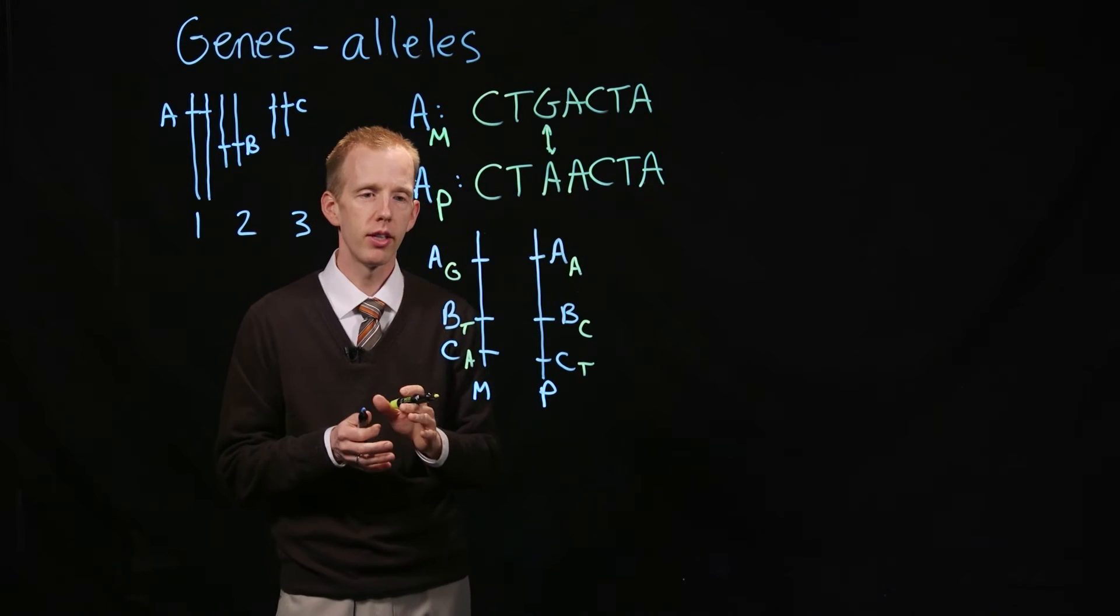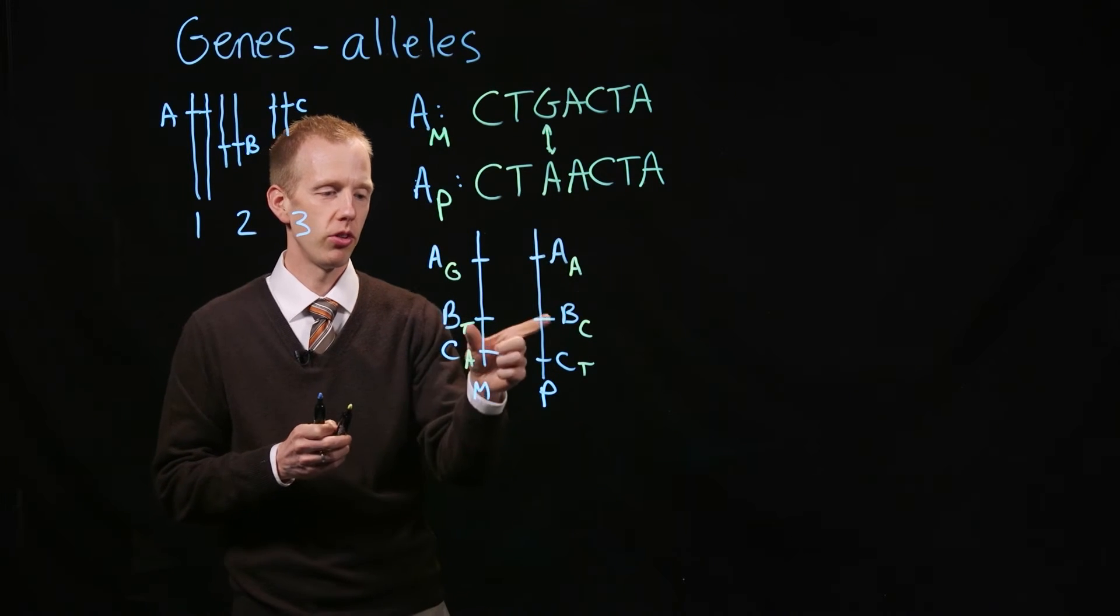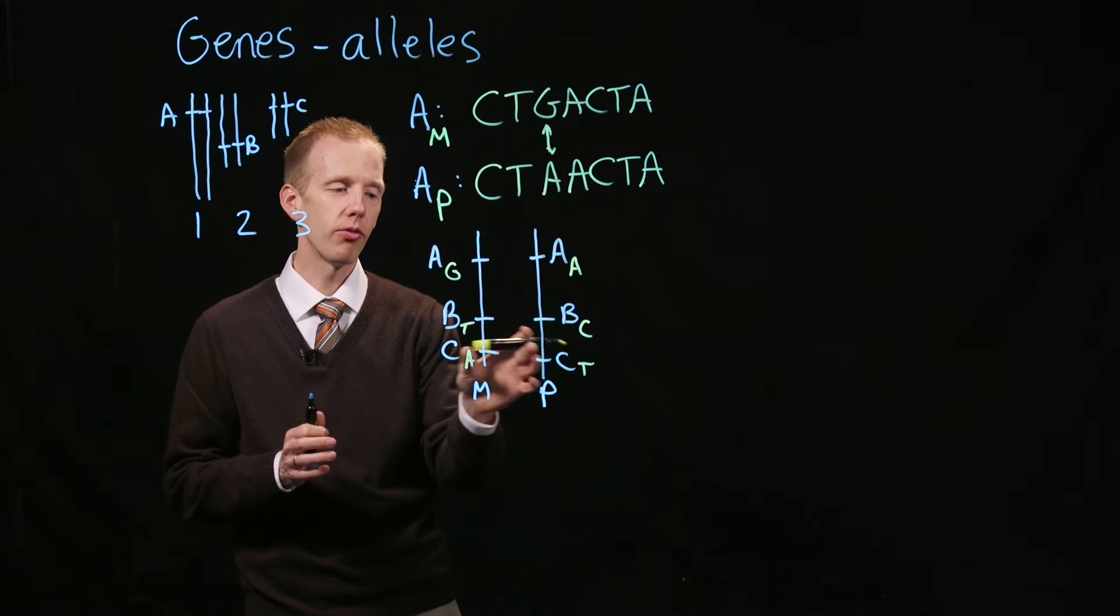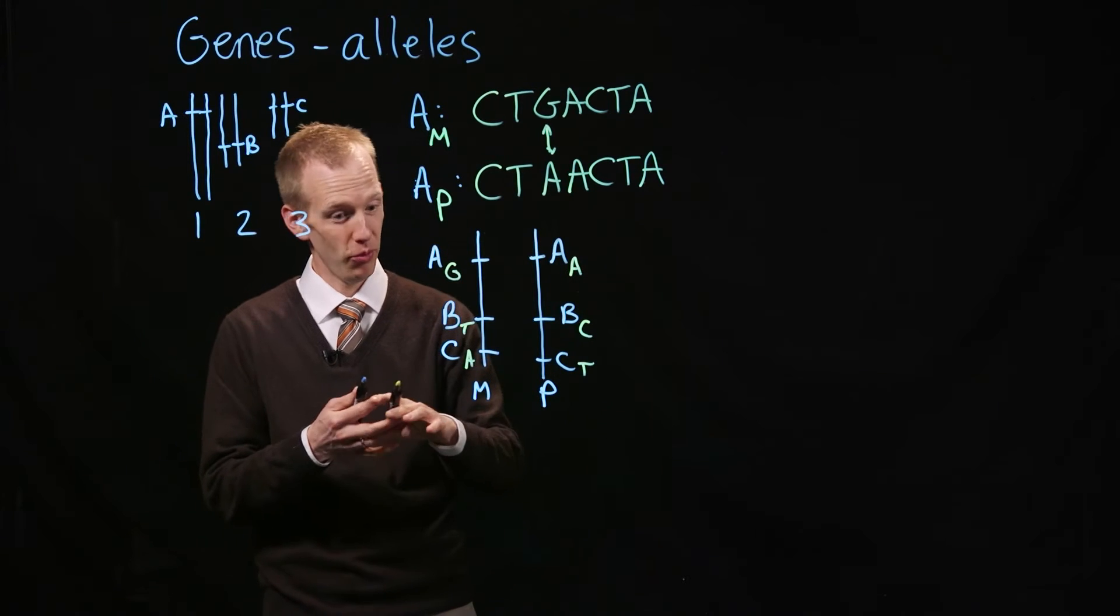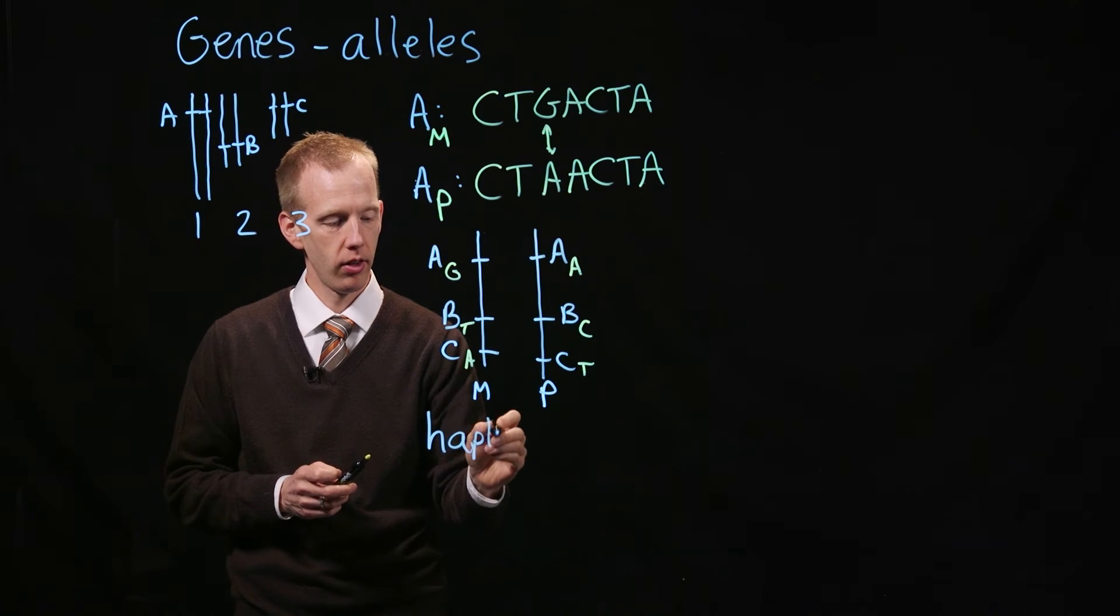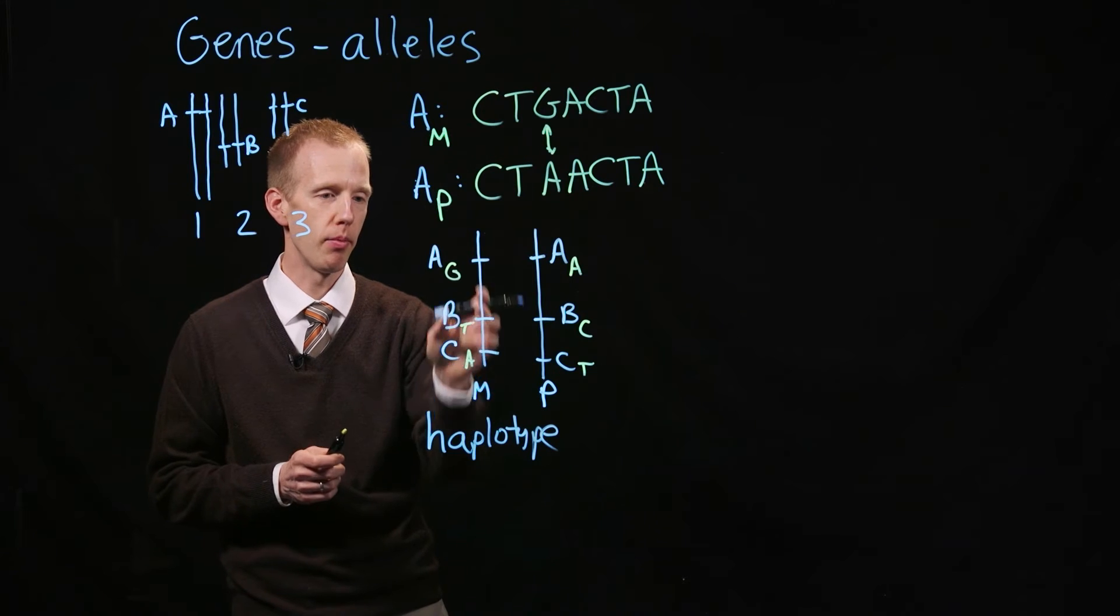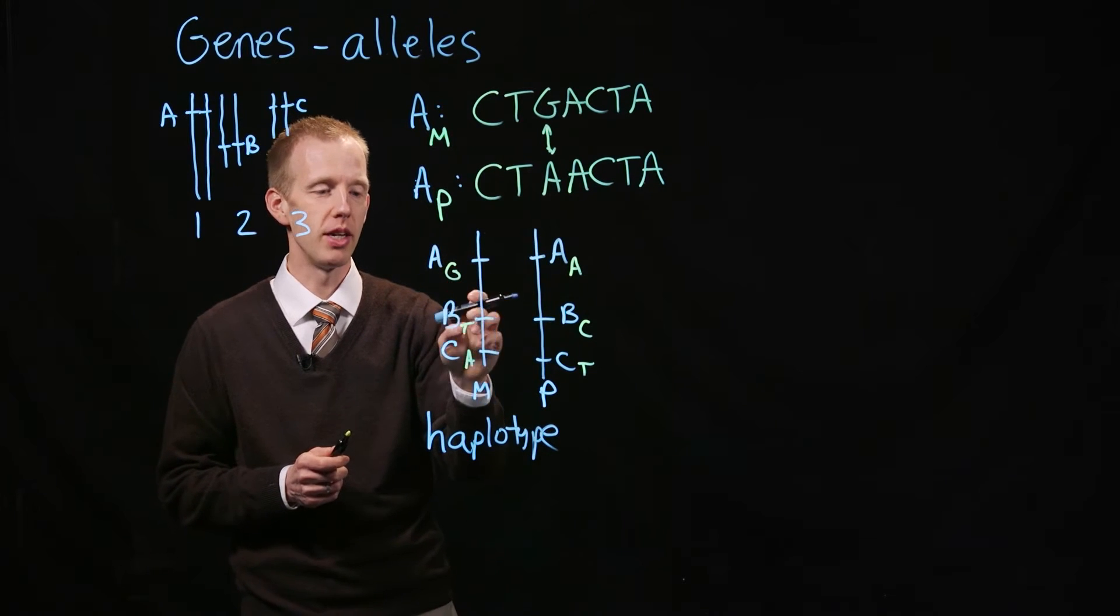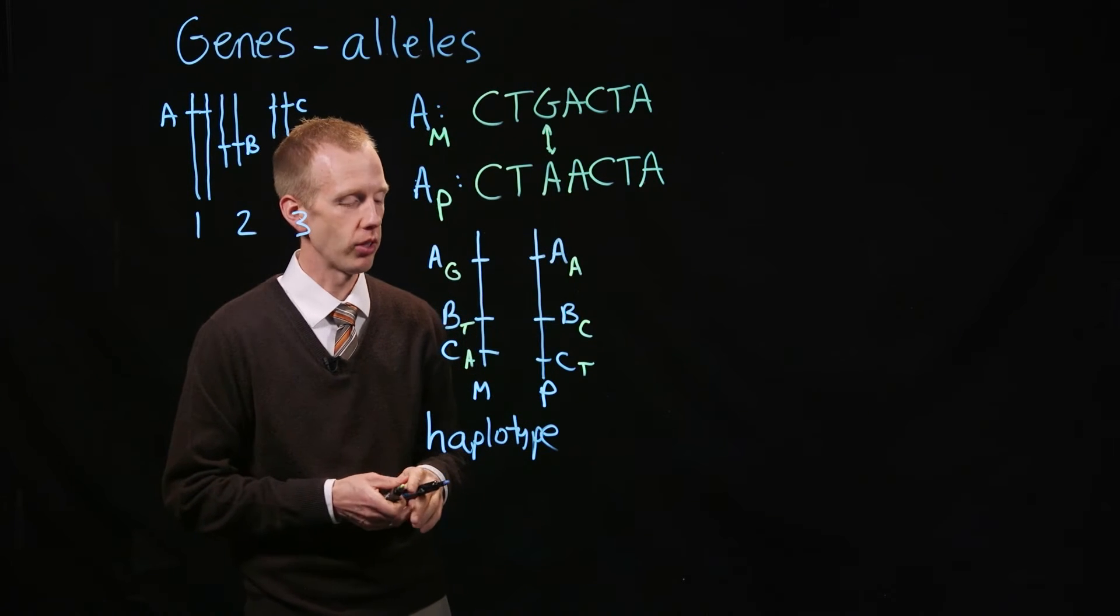The point that I want to leave you with is that if you're a diploid organism, you can only have two different chromosomes. There are two different alleles of chromosome 1. You've got your maternal haplotype, which is another word for a chromosome-wide allele. You've got the maternal haplotype, that is, chromosome, where gene A has a G in it, gene B has a T in it, and gene C has an A in it, and you have a paternal haplotype as well.